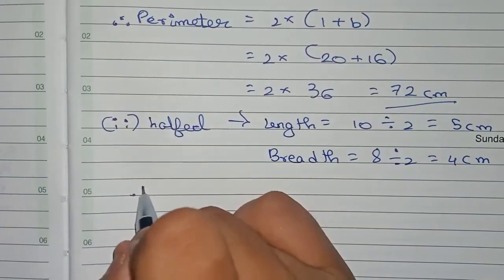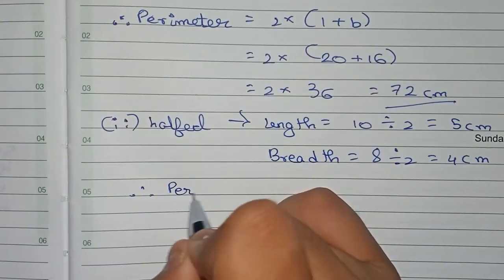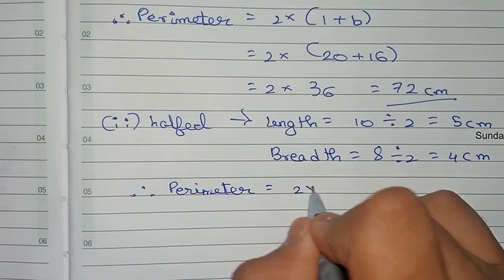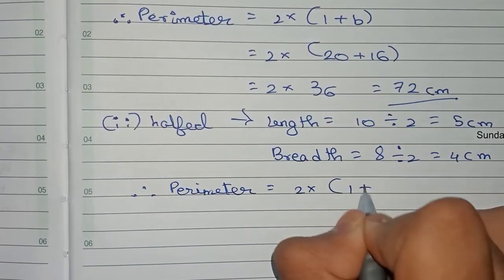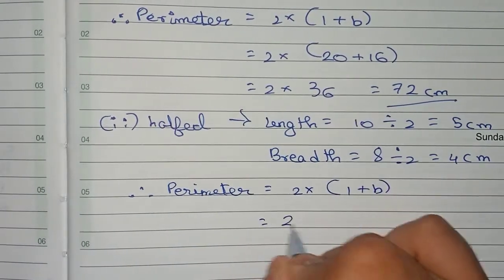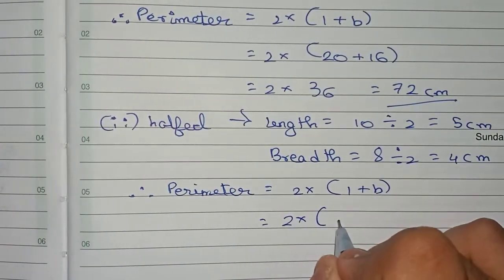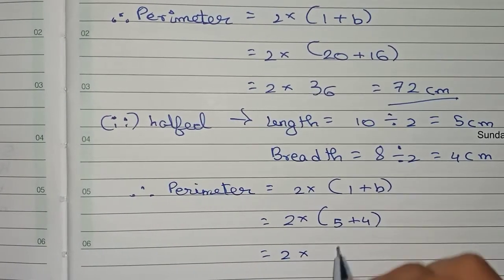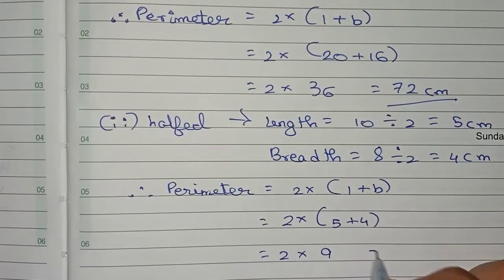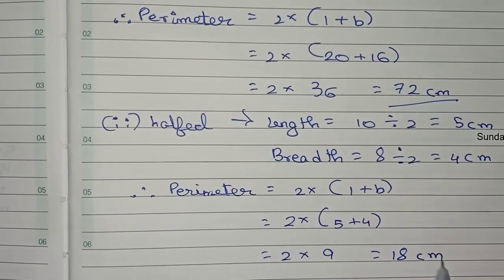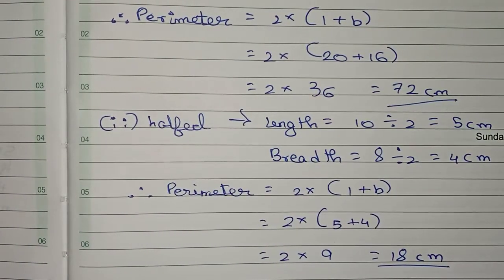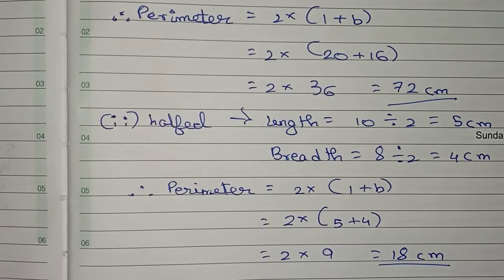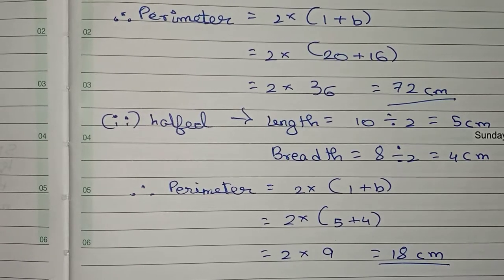Similarly, find the perimeter. Therefore, perimeter equals 2 into length plus breadth, that is equal to 2 into 5 plus 4, that is equal to 2 into 9, which equals 18 centimeters. So 18 centimeters is the answer for this question. Thanks for watching this video, and please subscribe to my channel for more solutions.